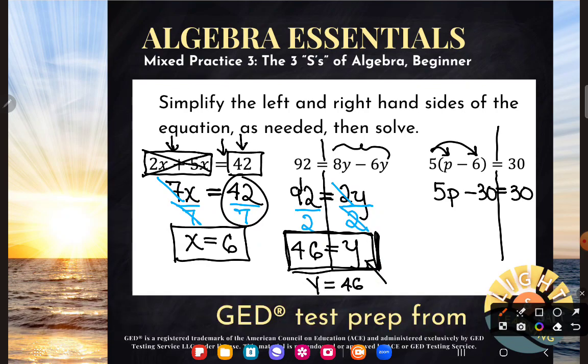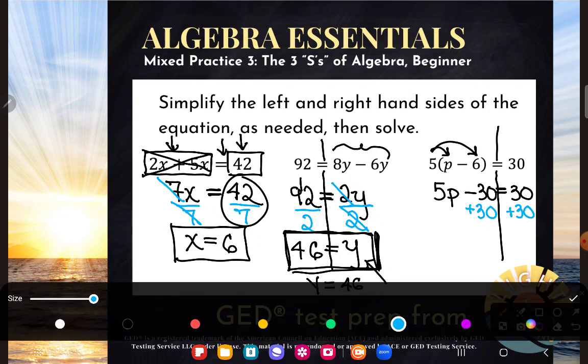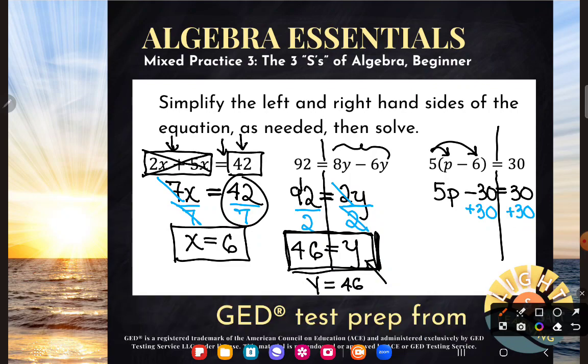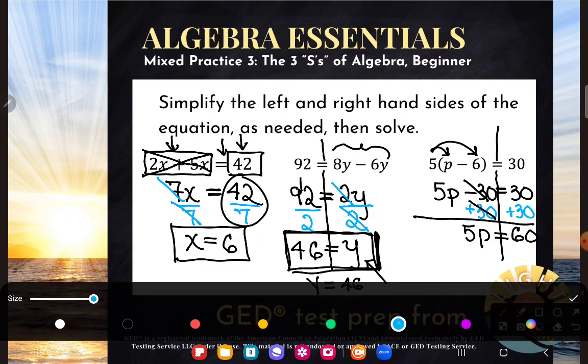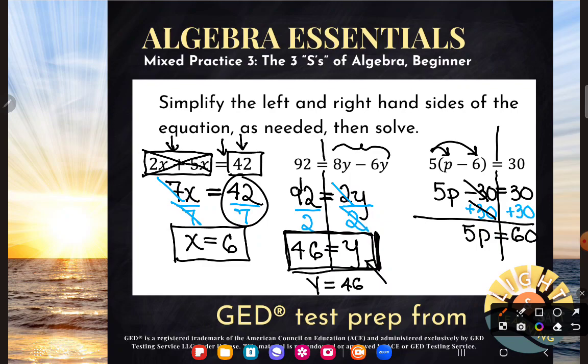So two-step equations. I work the order of operations backwards. Any addition or subtraction that's not in a grouping will go first. Subtracting 30 and adding 30 are opposites. They cancel. 5p is left on the left hand side. 30 plus 30 is 60. And 5 is still hanging out with p. It's multiplying. So I'll divide to get rid of it.